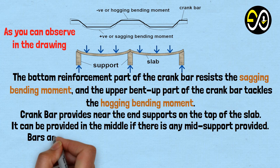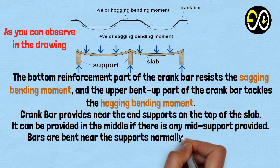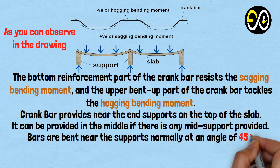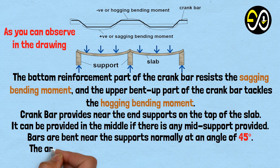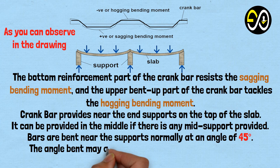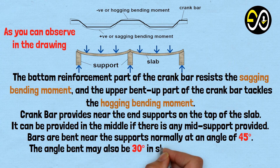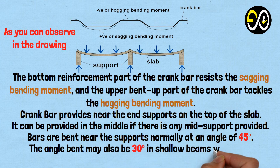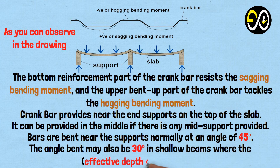Bars are bent near the supports normally at an angle of 45 degrees. The angle of bent may also be 30 degrees in shallow beams where the effective depth is less than 1.5 times the breadth.